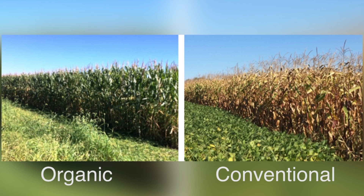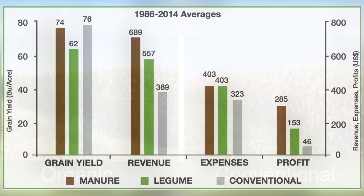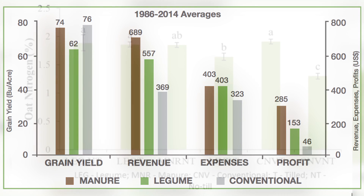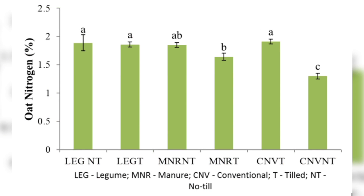In the past, we have examined yield, input, cost, and greenhouse gas emissions. In 2014, we began examining the nutritional values of oats to determine if how soil was managed affected the nutrient quality of the food grown on the land.